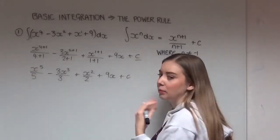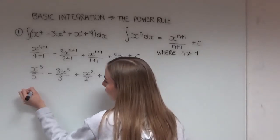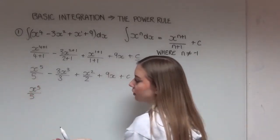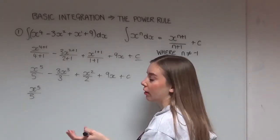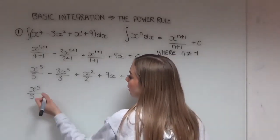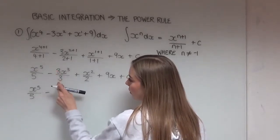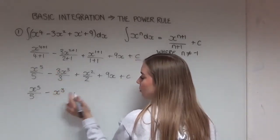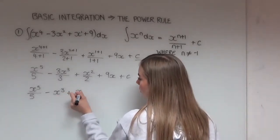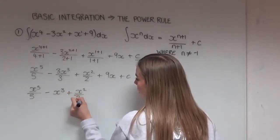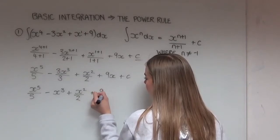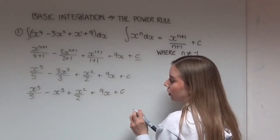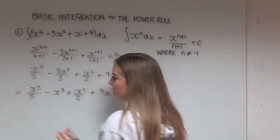Then I can tidy this up even more. So here is x to the power of 5 divided by 5. You can write it as 1 fifth x to the power of 5, but I'm just going to leave it like that. Then here our 3's cancel, so that becomes minus x cubed. Again, I'm just going to leave this term as it is, so that's plus x squared divided by 2. My 9x stays the same, and our constant of integration stays the same as well. And that's our final answer there.